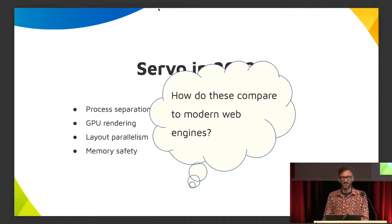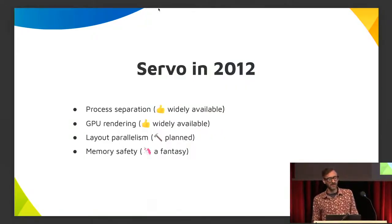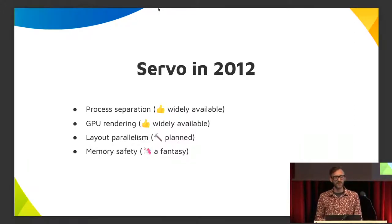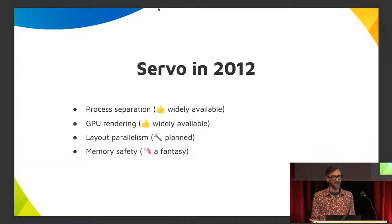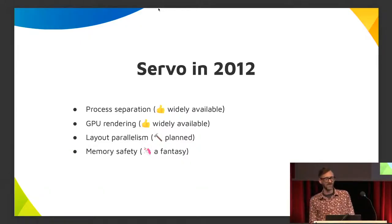And this was 12 years ago. You may be wondering how this compares to the state of things now, because a lot of work has gone into web browser engines. In general, process separation is something that all browsers you use today take advantage of — whether it's Gecko, Edge, or Chrome. GPU rendering is much more common; in fact, one component Gecko is using from Servo right now is the WebRender component, which does GPU rasterization. So in a sense, Servo was very forward-looking with these kinds of features.